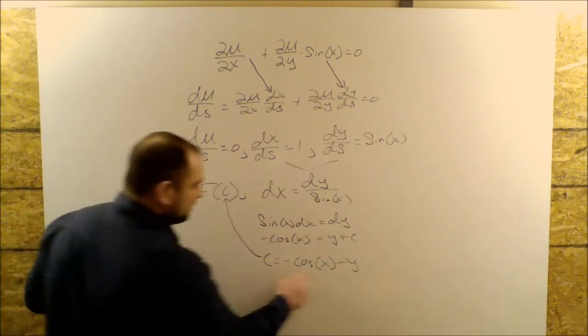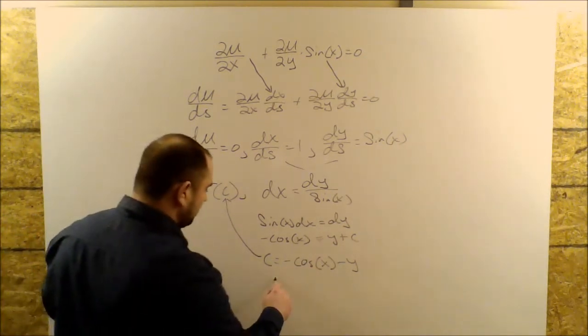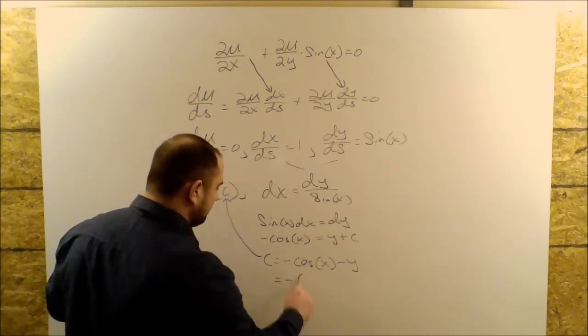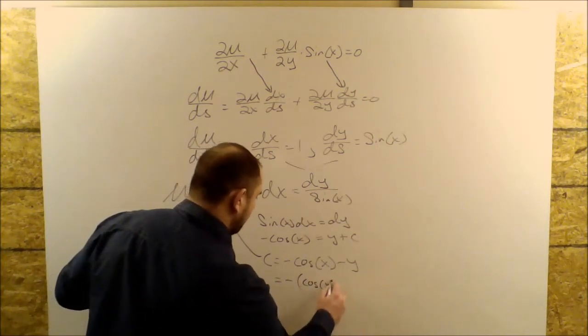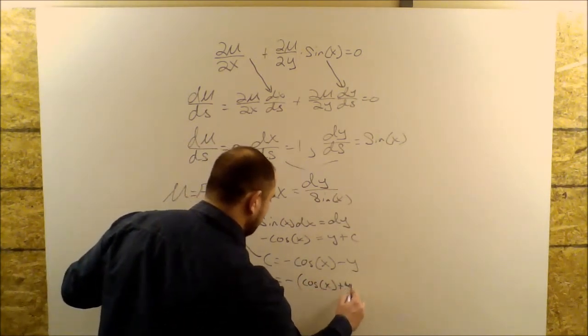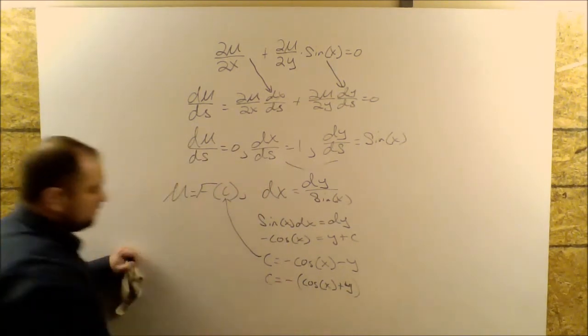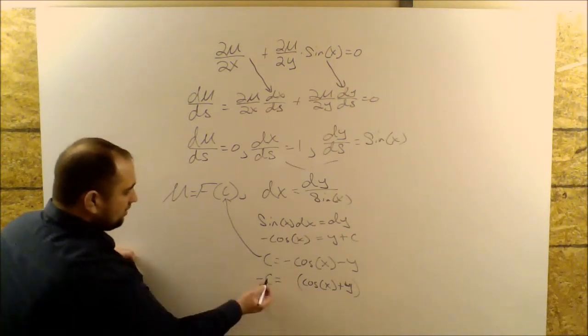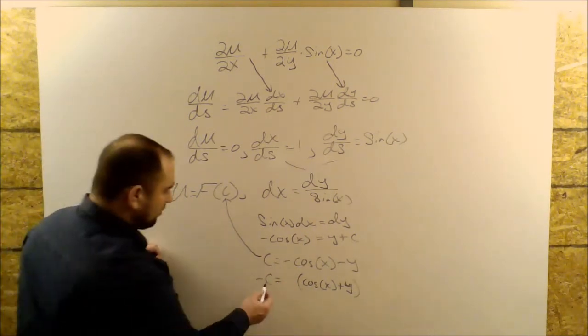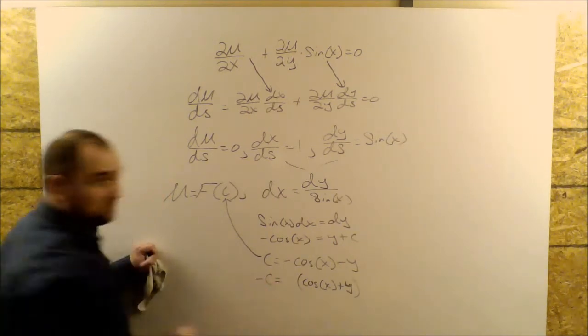Now, sometimes these negatives get to be rather irritating. What we can do is we can factor out a minus sign and write this as cosine of X plus Y, and then we can simply take this minus sign and move it over here. Now, C is just a constant, so we can absorb this negative sign into the constant. It doesn't matter.